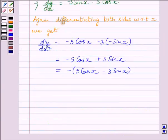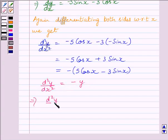So, we can write d square y upon dx square is equal to minus y, or we can say this implies d square y upon dx square plus y is equal to 0.